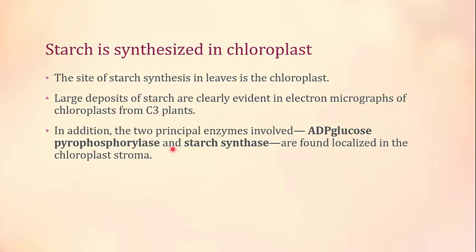An additional clue supporting chloroplast as the site of starch synthesis is that the two principal enzymes involved in starch synthesis — ADP-glucose pyrophosphorylase and starch synthase — are both found localized in the chloroplast stroma. So we have two key pieces of evidence: large starch deposits in the chloroplast, and the major enzymes for starch synthesis are localized in the chloroplast stroma.